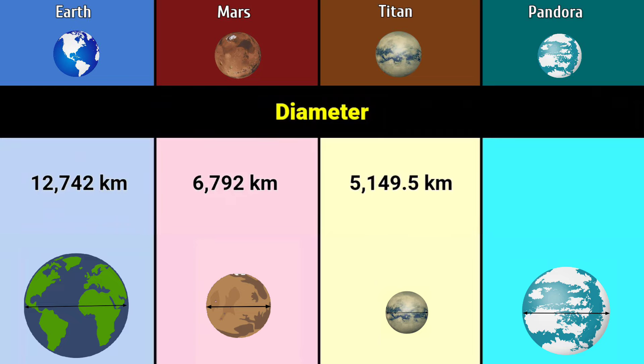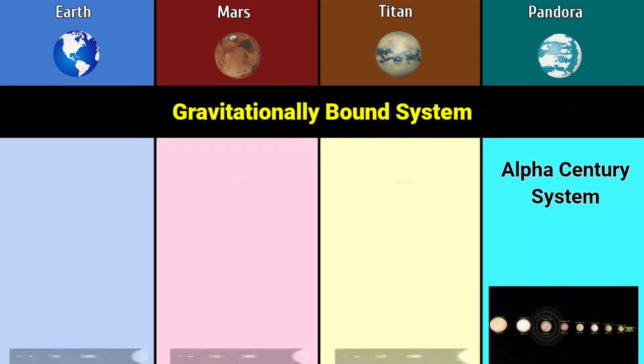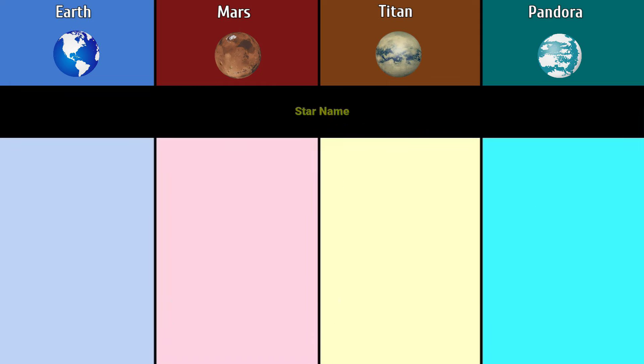Gravitationally bound system: Solar System, Solar System, Solar System, Alpha Centauri System. Star name: Sun, Sun, Saturn, Polyphemus.